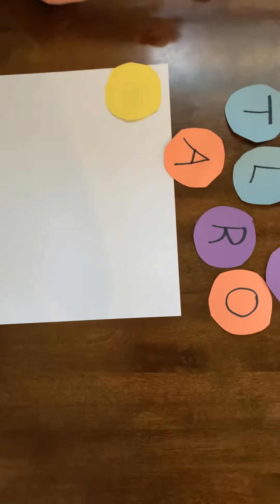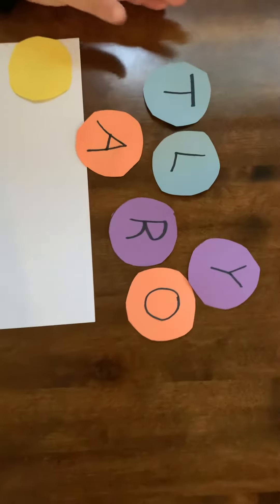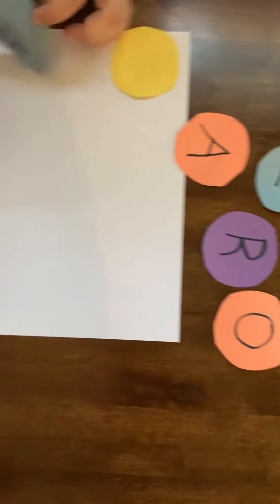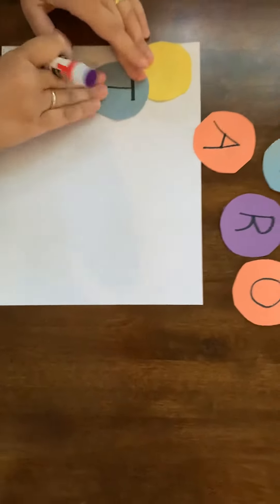Then we'll ask them, what's the first letter of your name? This child's name is Taylor, so we'd say, find the letter T. She would find the T. We would circle it, and then we would put it down, and we would pat, pat, pat.